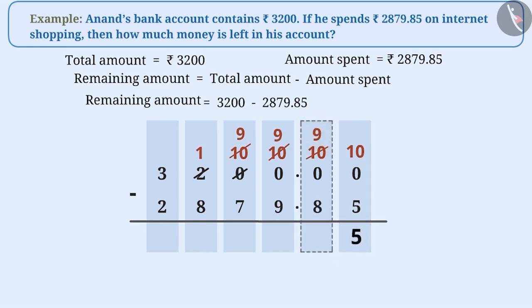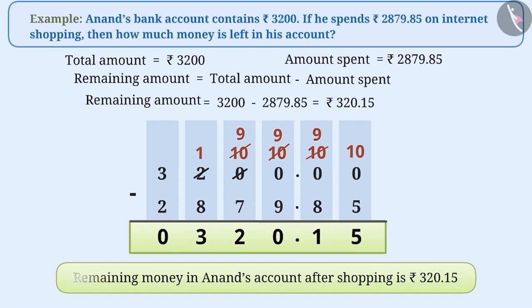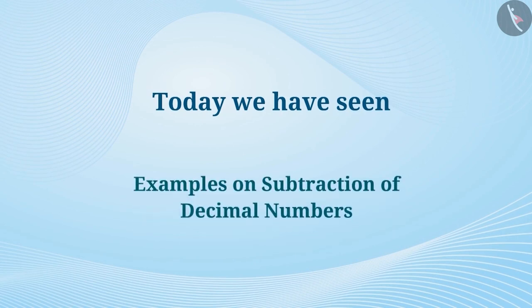Similarly, by subtracting 8 from 9 at the tenths place, we get 1, which is written in the tenths place in the result. By calculating the same way, we get the result as Rs. 320.15. Now, pause the video and try to understand how we solved this. Thus, the remaining money in Anand's account after the shopping is Rs. 320.15. Today, we have seen examples on the subtraction of decimal numbers. In the next video, we will clear some misconceptions related to it.